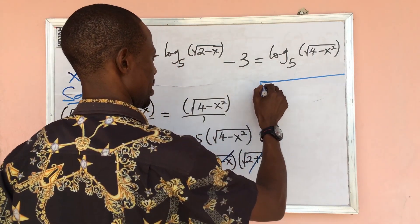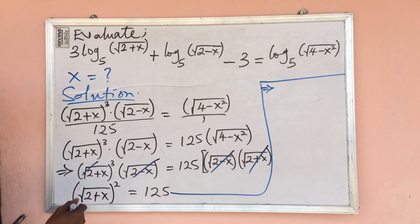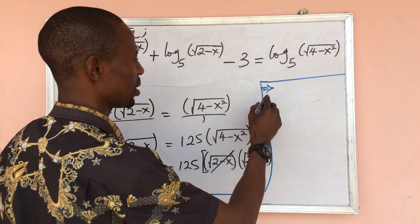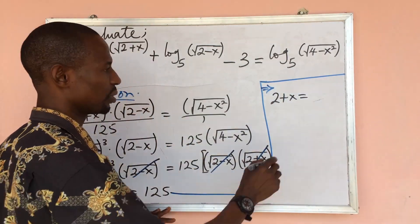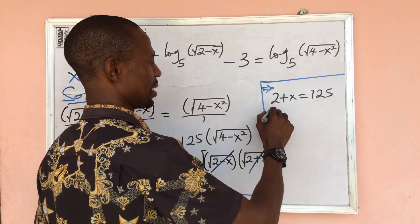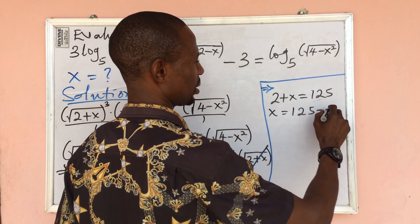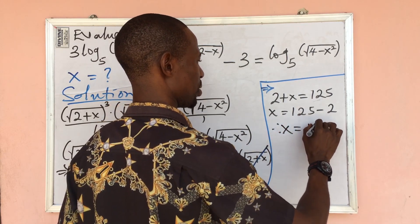We have a square root squared on the left side, so those cancel, leaving us with: 2 plus x equals 125. Collecting terms, x equals 125 minus 2, therefore x equals 123.